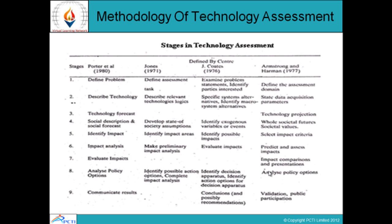Regarding the methodology of technology assessment — there are different methodologies, but in all of them we have certain stages. In total, there are nine stages in technology assessment. The first stage is to define the problem, because if you want to assess the technology, you must know what problem you are addressing and for what purpose. The problem definition stage involves a proper specification of the problem to be studied and establishing the limiting or bounding parameters which bound the technology.